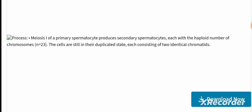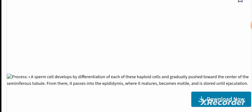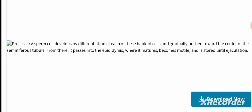During meiosis 1, the primary spermatocytes produce secondary spermatocytes, each with a haploid number of chromosomes. The cells are still in their duplicate state, each consisting of two identical chromatids. A sperm cell then develops by the differentiation of each of these haploid cells and is gradually pushed towards the center of the seminiferous tubules.